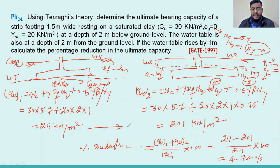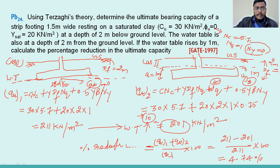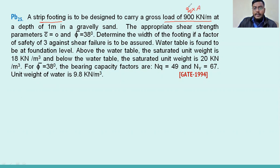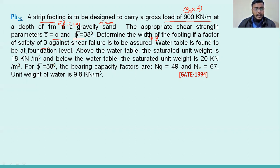You can see there is a reduction when the water table rises — reduction is about 4.74 percent. Let's go to Question 25. A strip footing is to be designed to carry a gross load of 900 kilonewtons per meter at a depth of 1 meter in a gravelly sand where c = 0 and φ = 38 degrees. Determine the width of footing using factor of safety = 3 against shear failure. Water table is at foundation level.